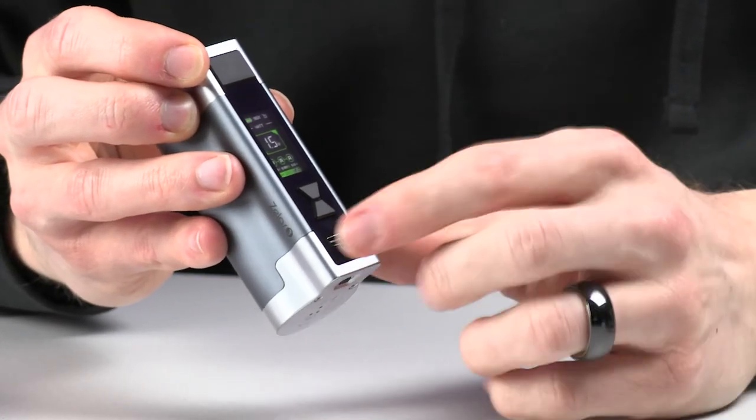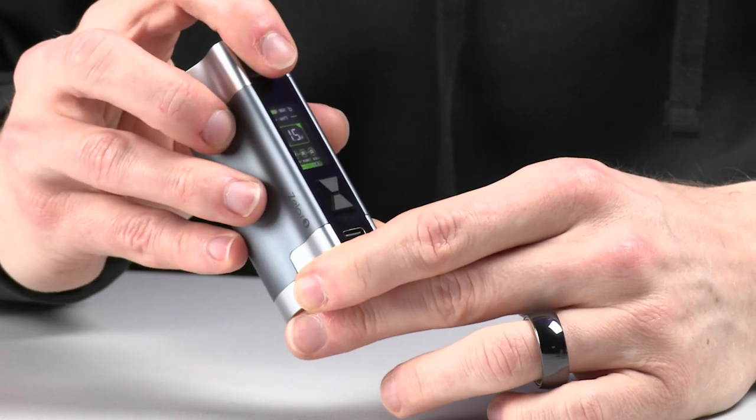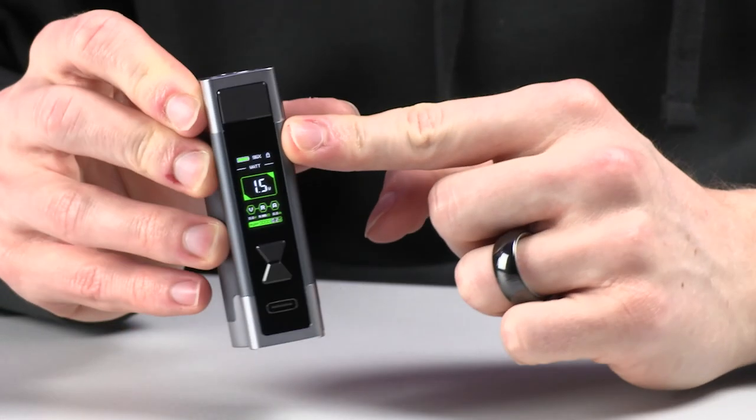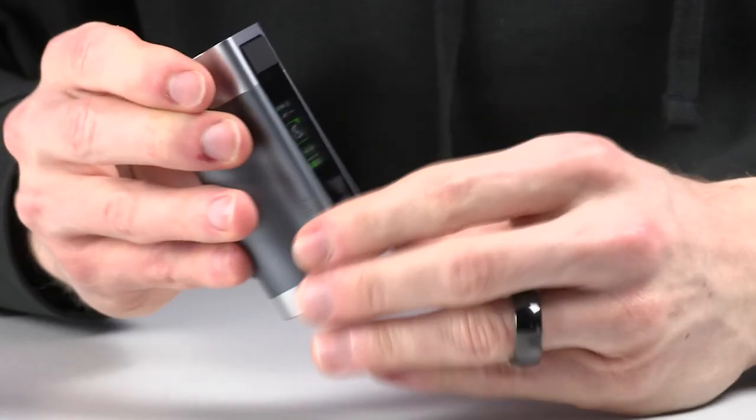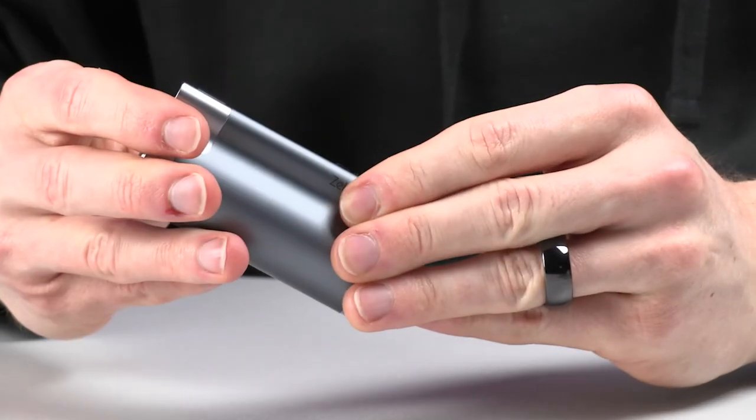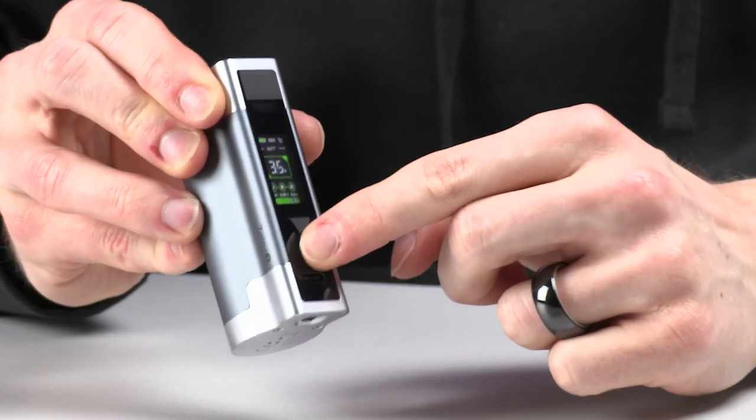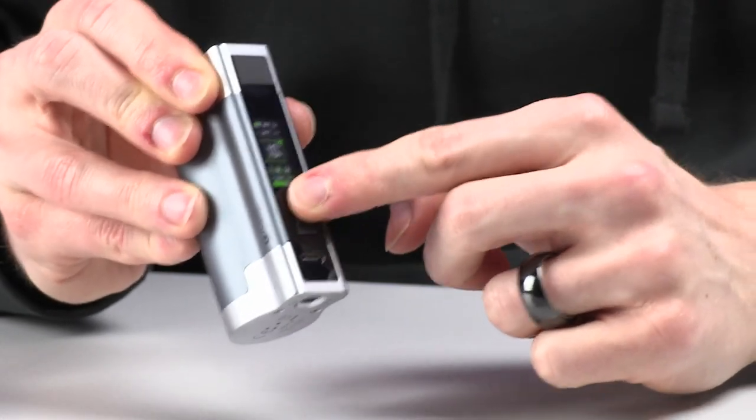Or what we can do is lock the device with three clicks. One, two, three. And that has locked the device by showing the lock in the corner. And one, two, three. Now that unlocks the device so that you can change the wattage by pressing the up or down buttons.